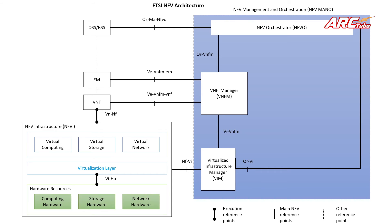Other than the execution reference points and the main MANO reference points, we also have other reference points which are not formally named by the ETSI NFV architecture, but are shown since they are important in real-life implementation. One such reference point is between OSS/BSS and the Element Manager — depending on the operator implementation, it could be an open or a closed proprietary interface. There is also another reference point between OSS/BSS and the NFVI.